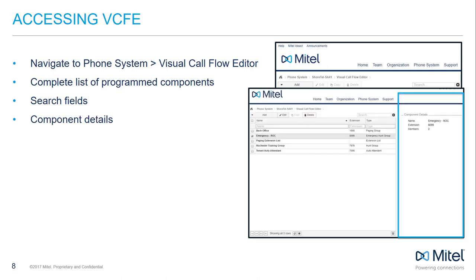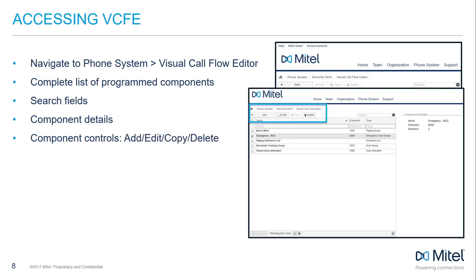Details about existing Callflow Components are displayed to the right when a component is selected. From the controls at the top left, you can add any component type using the Add drop-down menu. You can edit existing components by checking the box next to the component and clicking Edit. You can also copy existing components or delete a component from the system.